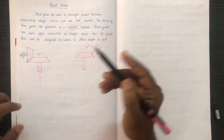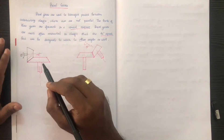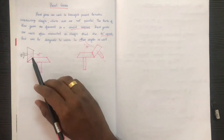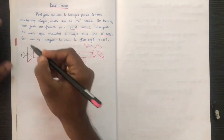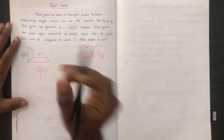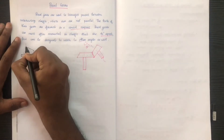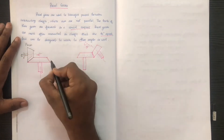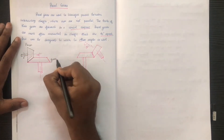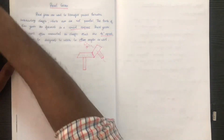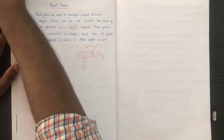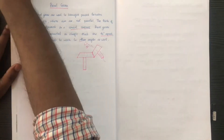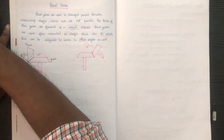First of all, we have one component of the gear. Here we have a pinion. We have the pinion and we have the gear. We have the power transmission.